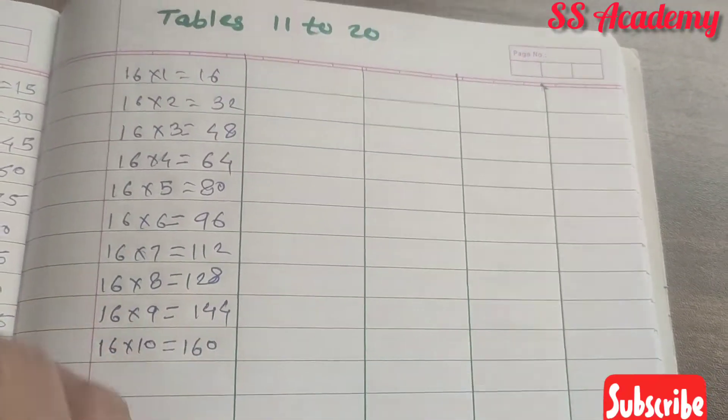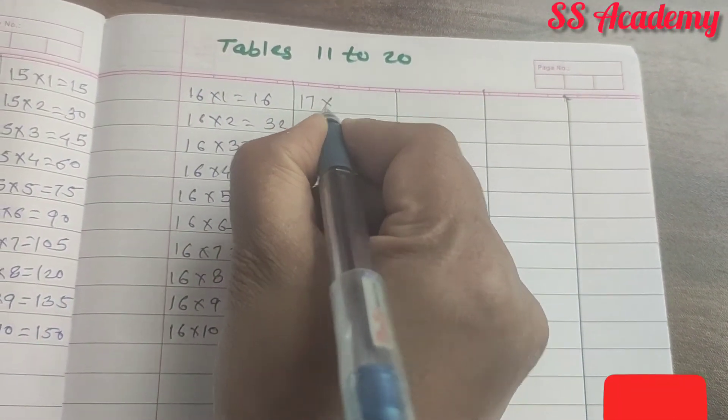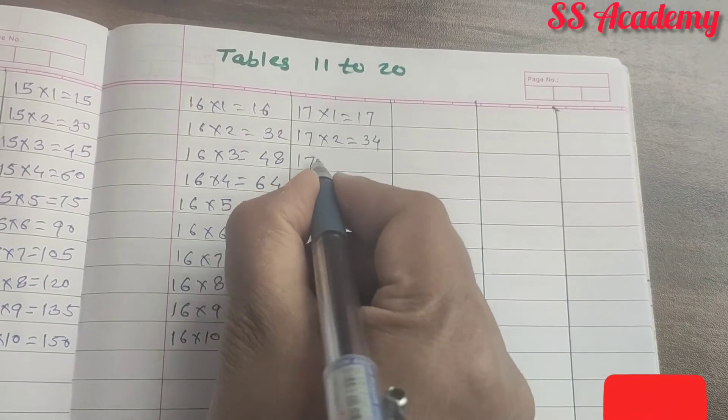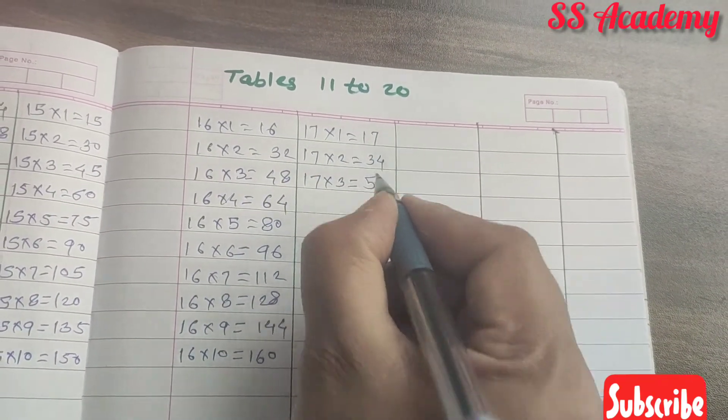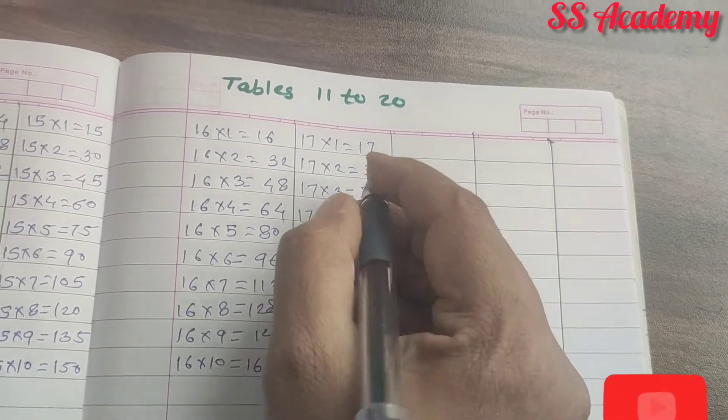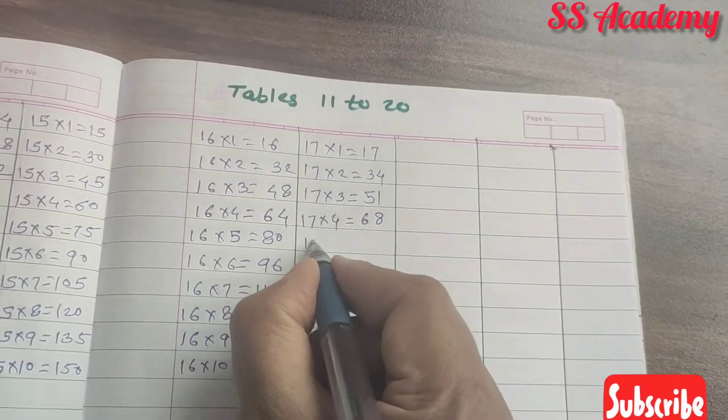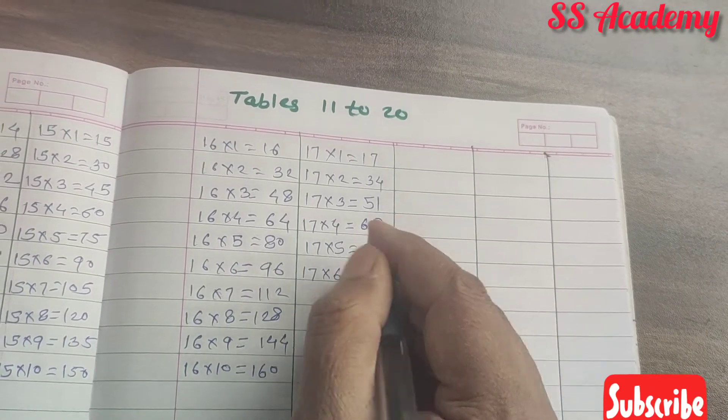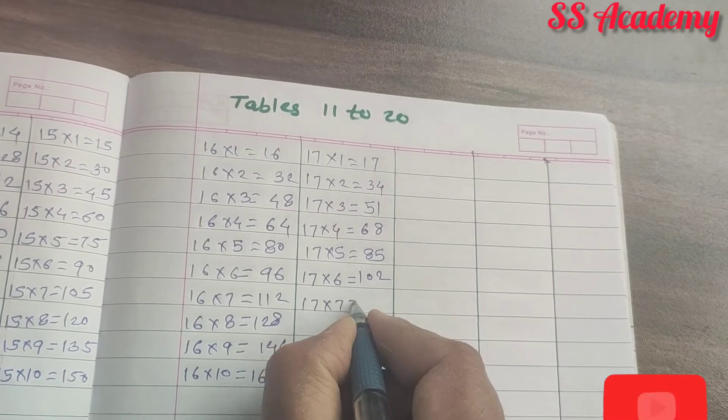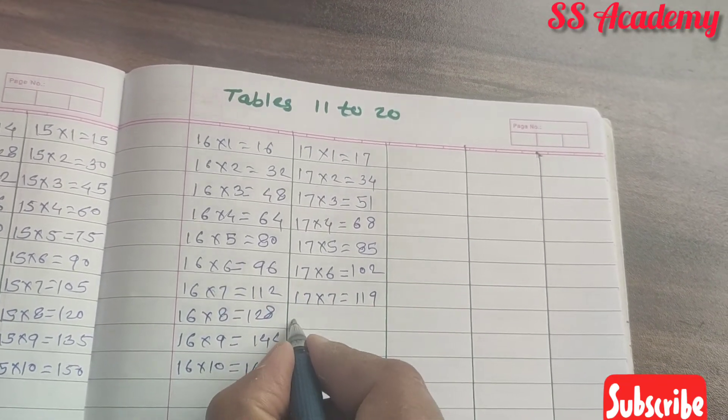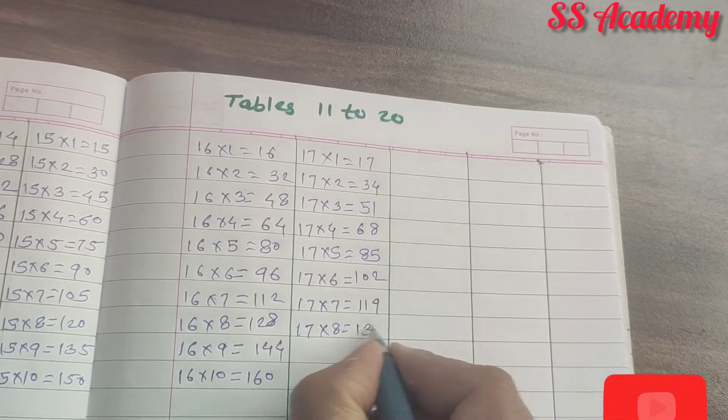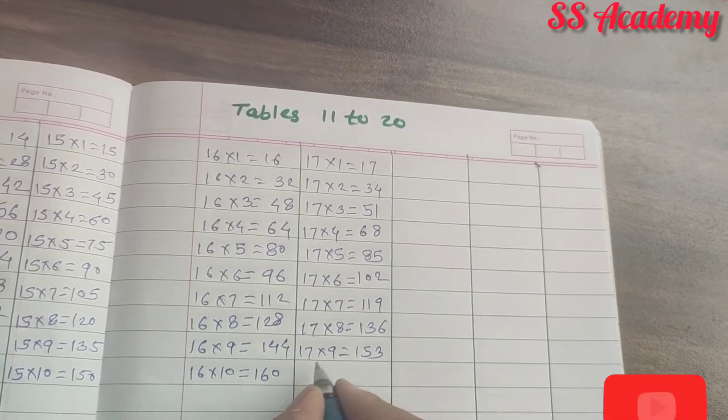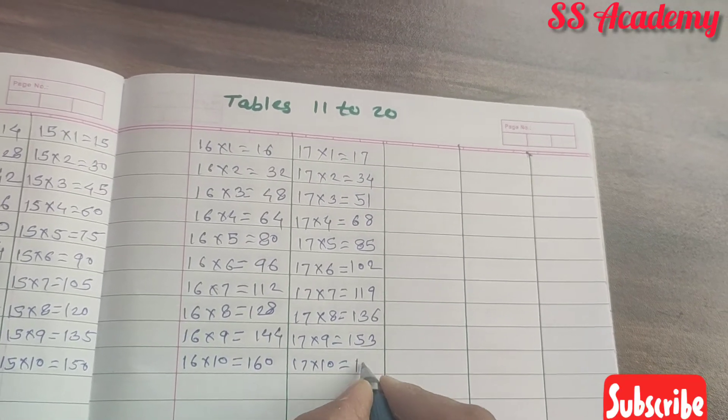Next number 17. 17 times 1 is 17. 17 times 2 is 34. 17 times 3 is 51. 17 times 4 is 68. 17 times 5 is 85. 17 times 6 is 102. 17 times 7 is 119. 17 times 8 is 136. 17 times 9 is 153. 17 times 10 is 170.